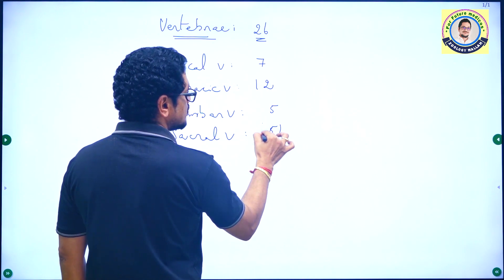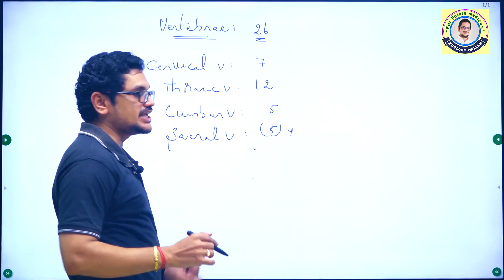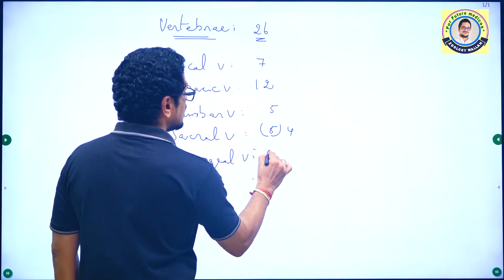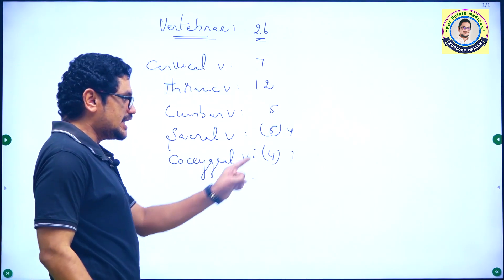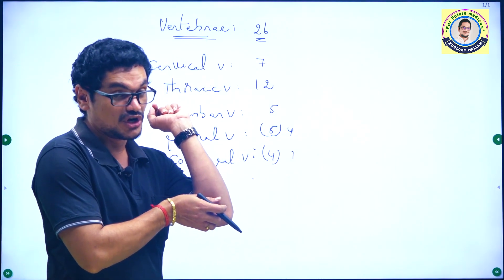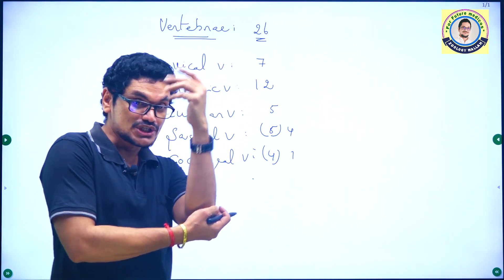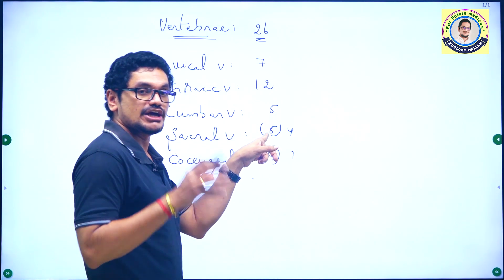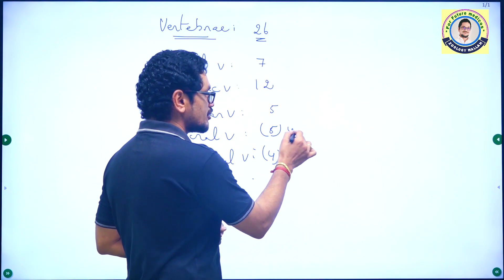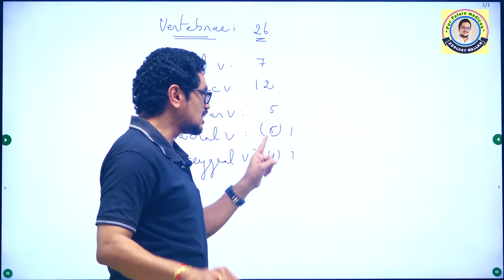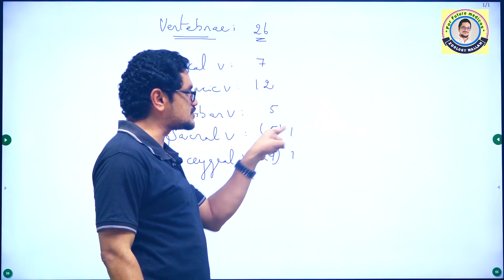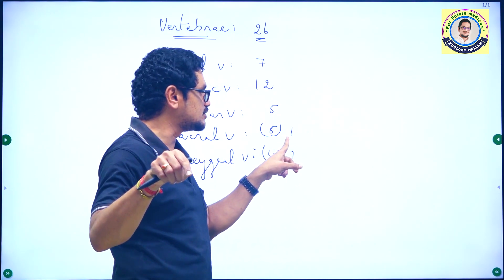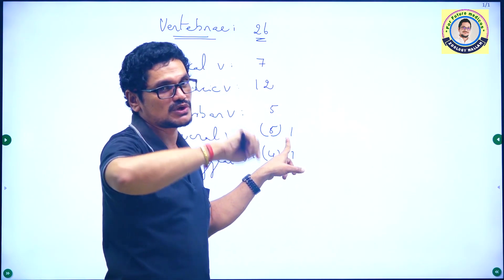Sacral vertebrae are 5 in number, but actually fused to form 1. Coccygeal vertebrae are 4 in number, fused to form only 1. Initially, at the time of birth, the number of bones will be around 300, but the number reduces as the person grows because of fusion of some bones. Here 4 bones fused to form only 1.